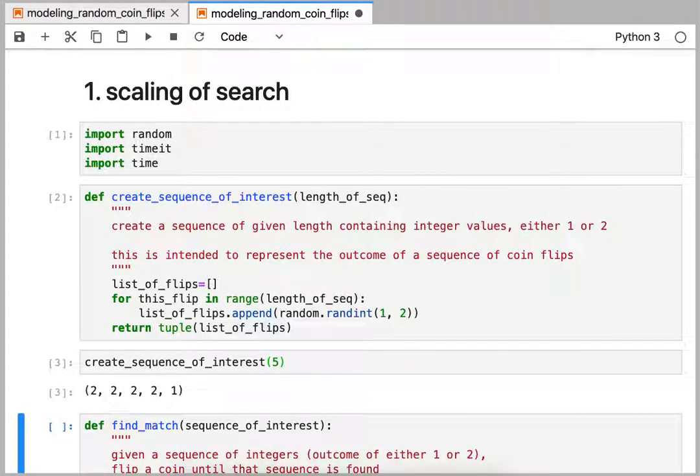I can call that function to see what that looks like, just to get some idea of the outcome of say five coin flips. I'd get maybe heads, heads, heads, heads, tail. Okay, so that's our first function, setting us up for what we're going to match with.